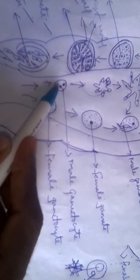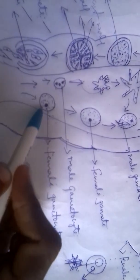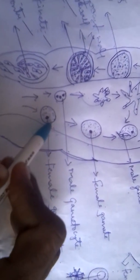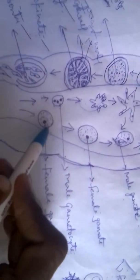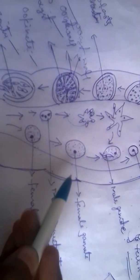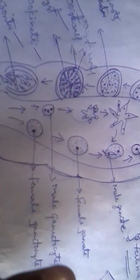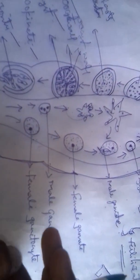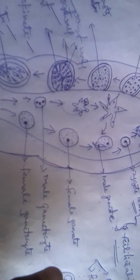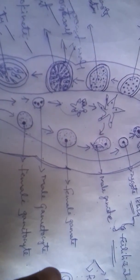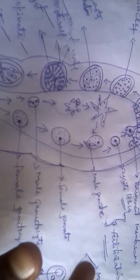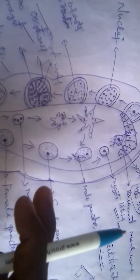This is a male gametocyte and this is a female gametocyte. These are present inside the secondary host, the human being. When the mosquito bites a malaria patient, it takes the gametocytes through its saliva.